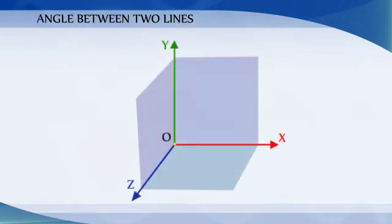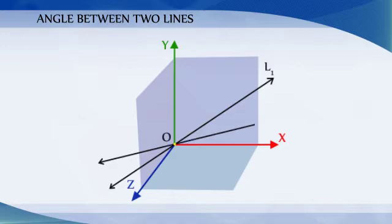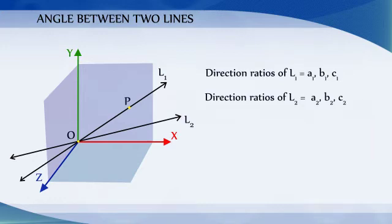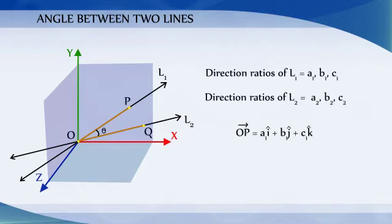Angle between two lines. Let L1 and L2 be two lines passing through the origin with direction ratios A1, B1, C1 and A2, B2, C2 respectively. Let P be any point on L1 and Q be any point on L2. Let theta be the angle between two directed lines OP and OQ. These directed line segments are nothing but vectors with components A1, B1, C1 and A2, B2, C2 respectively.